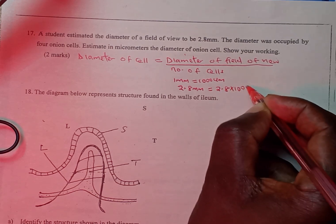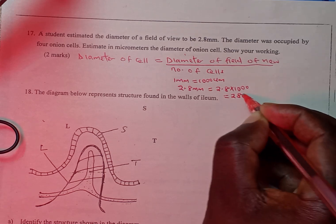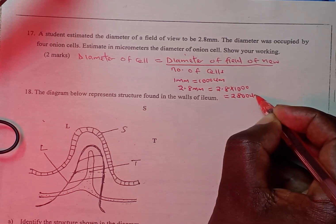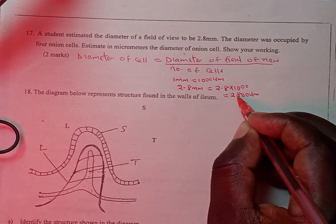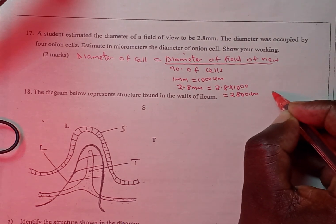giving us 2800 micrometers. And in this case, to get the diameter of one cell,